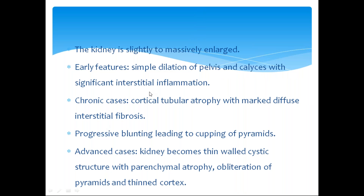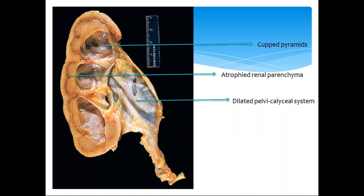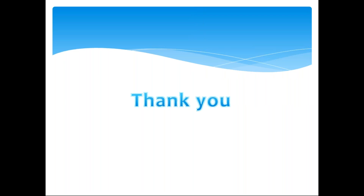In chronic cases, there is cortical tubular atrophy with marked interstitial fibrosis. Progressive blunting leads to cupping of pyramids. In advanced cases, completely cystic structures with parenchymal atrophy, obliteration of pyramids, and thinned-out cortex. The dilated pelvicalyceal system is the hallmark finding.